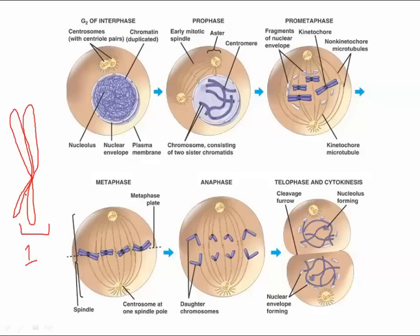The only purpose of replicating and making it look doubled is so that when I separate it, there will be two exact copies. So it does not go from one chromosome to two chromosomes. The correct terminology is: we call this one chromosome consisting of two sister chromatids. We call each piece a chromatid. But overall, this is one chromosome.